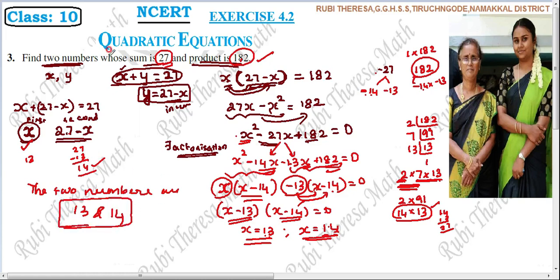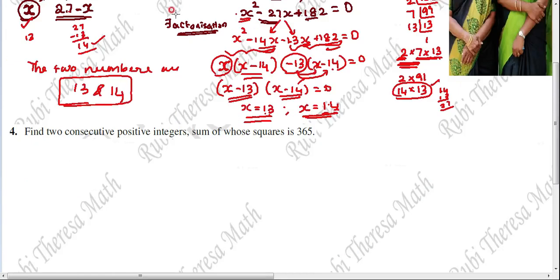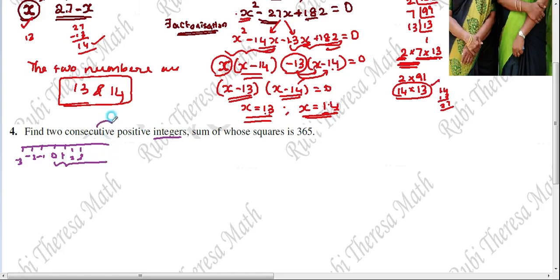Next problem: find two consecutive positive integers whose sum of squares is 365. Integers include positive and negative numbers; positive integers are on the right side of zero. Consecutive numbers differ by 1 — for example 1 and 2, 2 and 3, 3 and 4. So we need two consecutive positive integers.